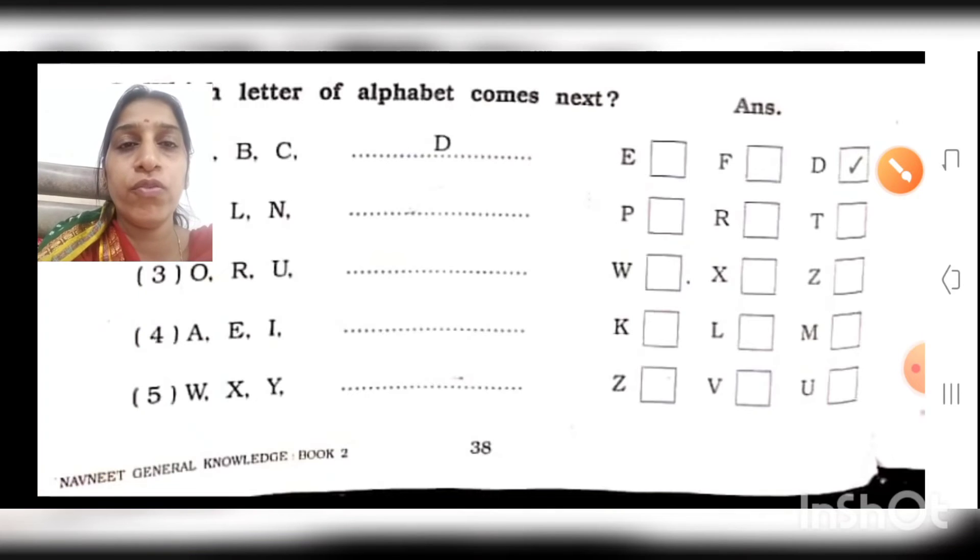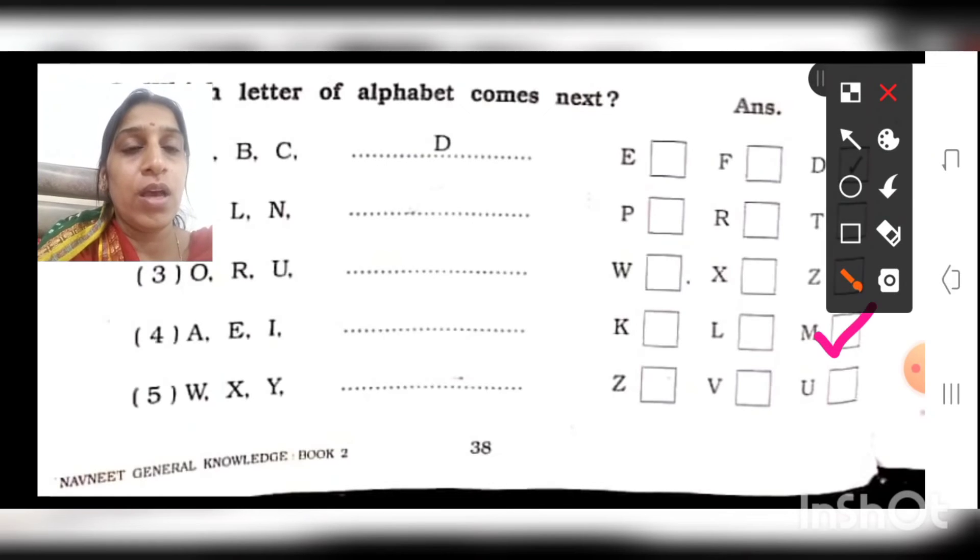Number 4: A, E, I. Now you have to guess. After A comes B, C, D. Three letters are not there. E comes. After E comes F, G, H. We skipped them. So I comes. After I comes J, K, and L. Which letter will come? After L comes M. Yes. We marked M. Easy, isn't it?